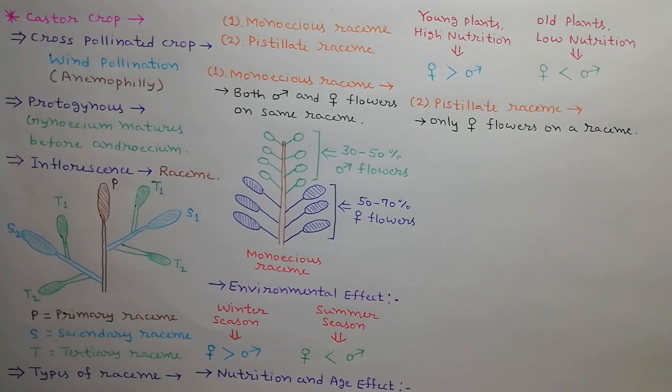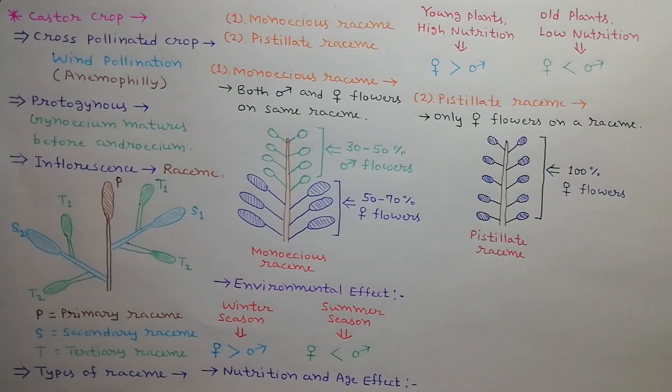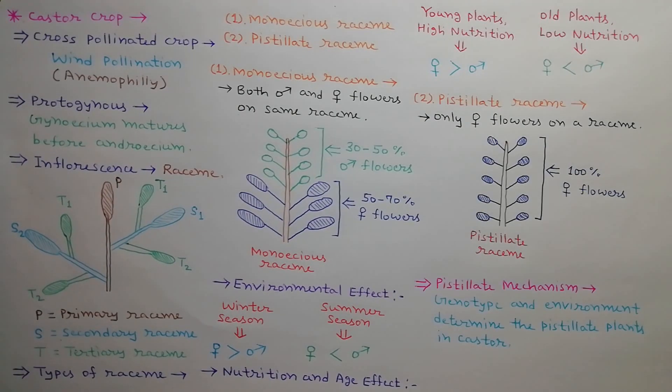When only female flowers are found in a racine, it is called pistillate racine. As shown in the diagram, 100% flowers are pistillate. Genotype of castor plant and environment determine whether the castor plant is monoecious or pistillate. Hence, determination of pistillate plants in castor is called pistillate mechanism.